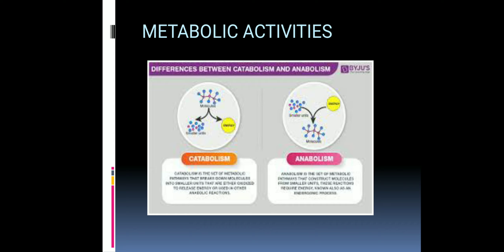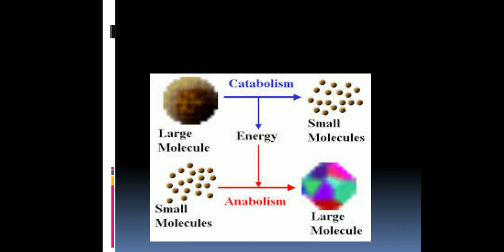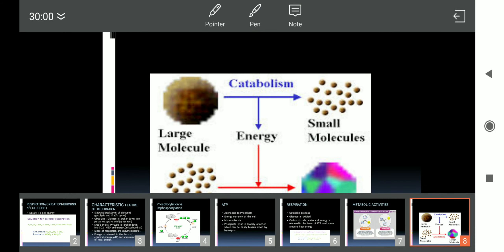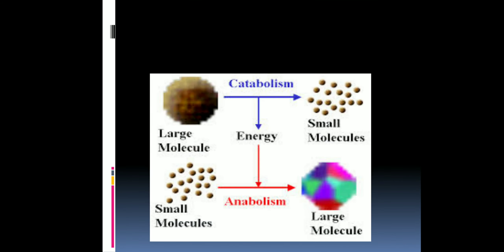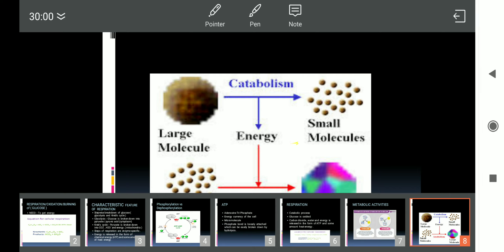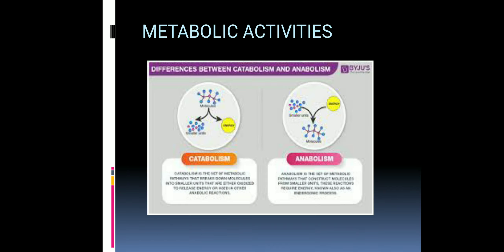In catabolism the energy is released, and in anabolism the energy is consumed. Catabolism is a breaking down process and anabolism is a biosynthetic process. In catabolism a large molecule is broken down into smaller ones, and in anabolism small molecules join together to form large molecules.